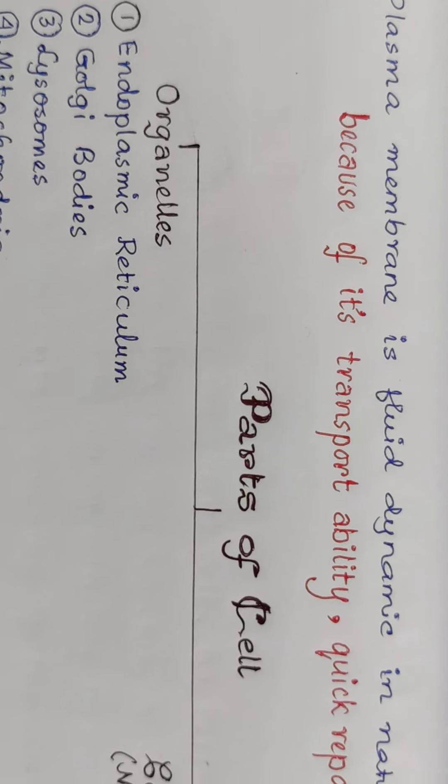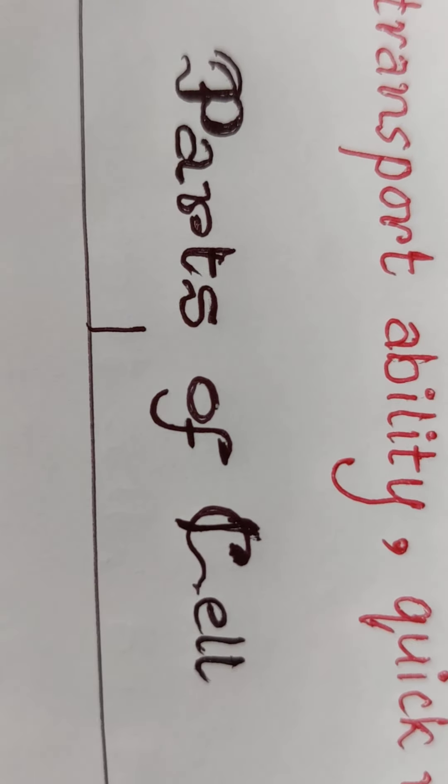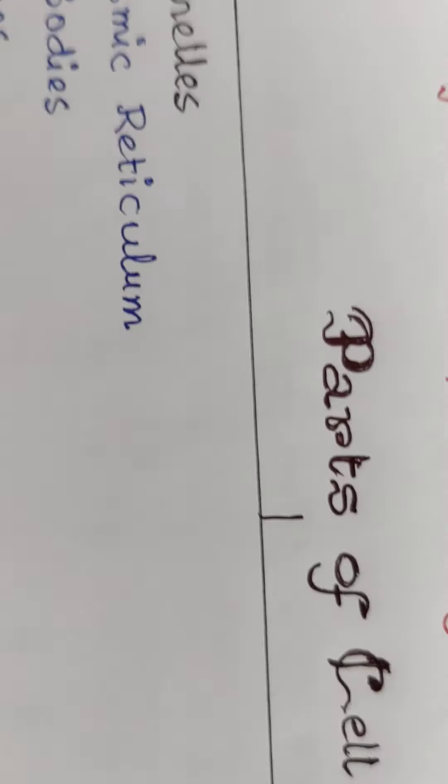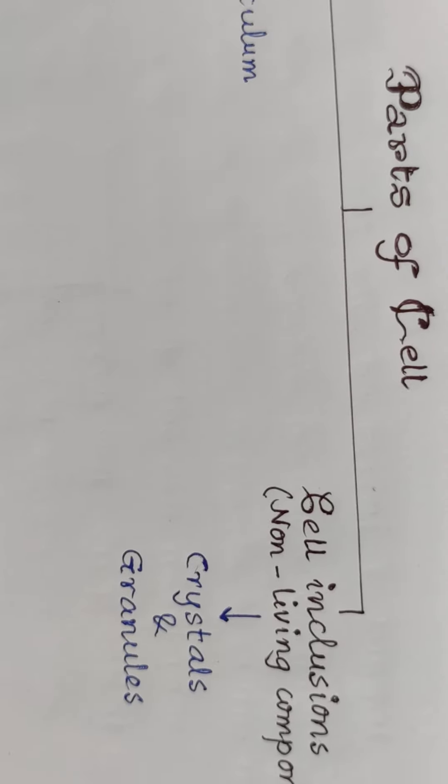So that's all about plasma membrane. Now coming to parts of the cell. What are the different parts of the cell? There are mainly two basic parts of the cell.